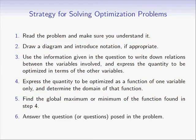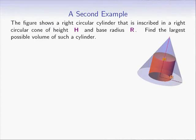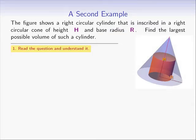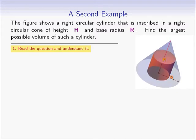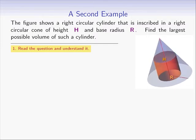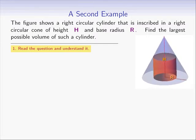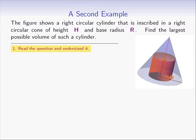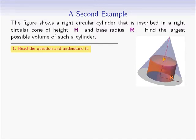Let's use those guidelines to solve the following problem. The figure shows a right circular cylinder inscribed in a right circular cone of height h and base radius r. Find the largest possible volume of such a cylinder. First we need to read the question and understand it. We have a cone with height h and base radius r — treated as fixed constants — and a cylinder inscribed inside the cone. There are many cylinders that can be inscribed within a cone, and we need to find the one with the largest possible volume.